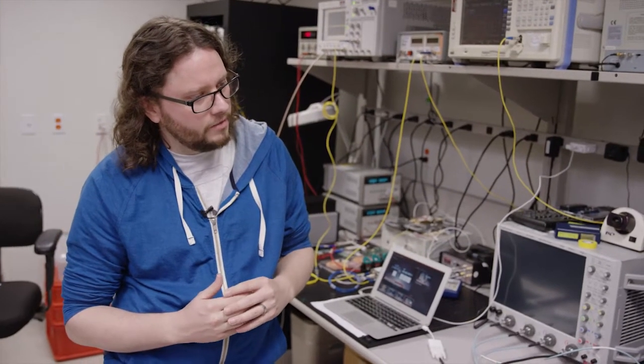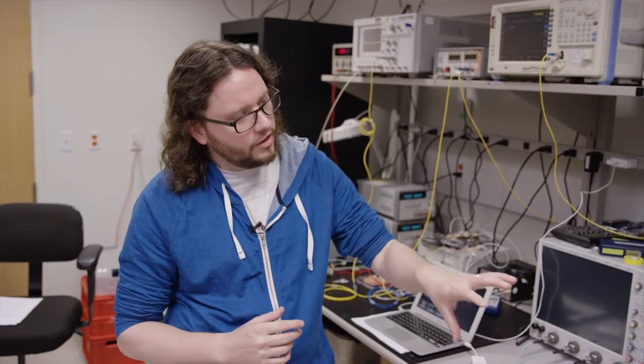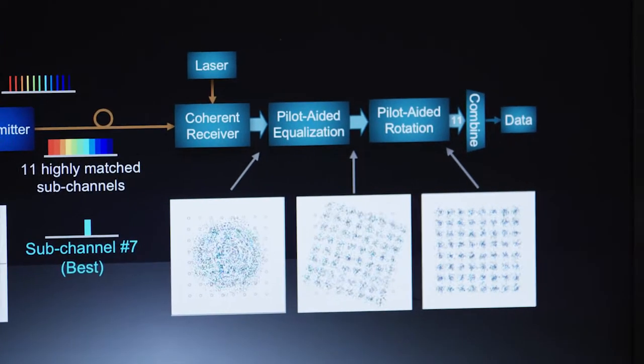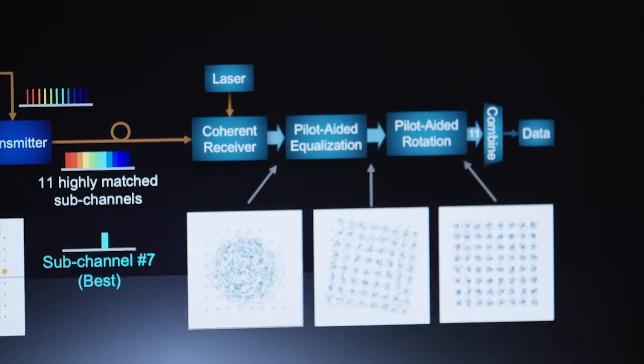So then we perform equalization on this. So this tries to undo the distortion that occurs in the transmitter and the receiver and the fiber due to things like insufficient bandwidth. And we can compensate here for all the distortion in the amplitude. The one thing that remains here is the rotation due to laser phase. The reason that we separate these two things out is that the amplitude distortion actually happens on a very slow timescale, whereas the phase distortion changes extremely rapidly.